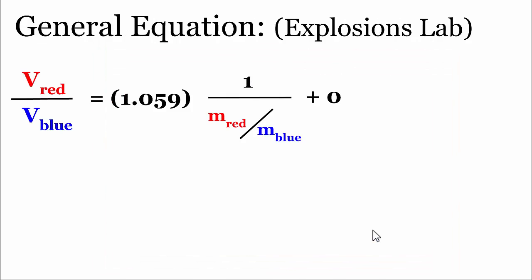Let's try to generalize these results. If we take the last group's equation, we've got the velocity ratio of red to blue is equal to 1.059 times the inverse of the mass ratio plus 0. There was no y-intercept. The y-intercept was considered insignificant.